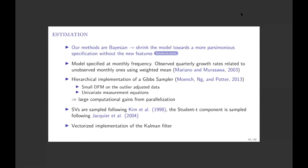Because the model has quite a few components, we want to be conservative about the complexity we introduce. We apply shrinkage going in the direction of all new components not being there. For example, for the time-varying trend we put a conservative prior on its variance, because if the variance went to zero you get a model with no trend. Similarly for outliers, we tilt the degrees of freedom prior towards normality. We do this with each of the components we use.